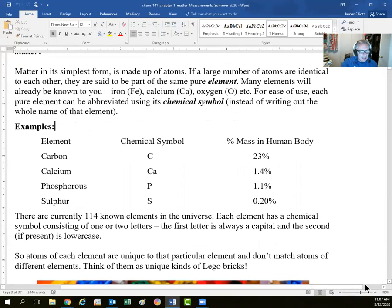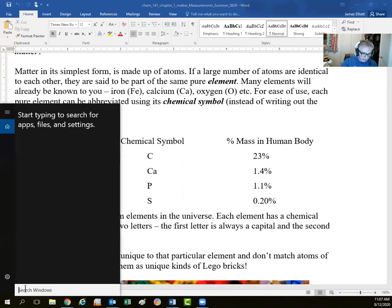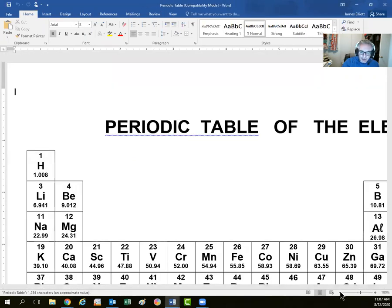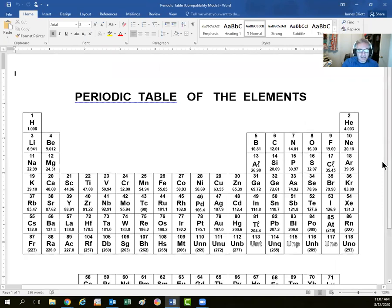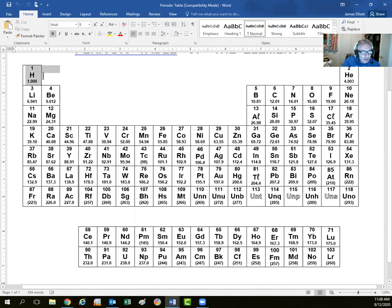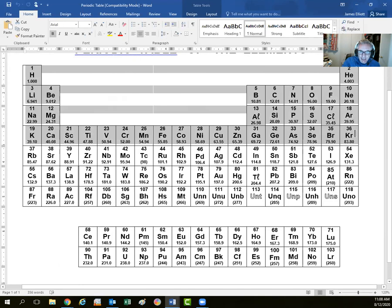We list the elements in the periodic table. In an exam, you'd always be given a copy of the periodic table. You would never be expected to have the periodic table memorized. I would suggest if you're familiar with the names and chemical symbols for all the elements in the first four rows of the periodic table, that's going to make you familiar with about 95% of the chemistry we look at over the course of the semester.